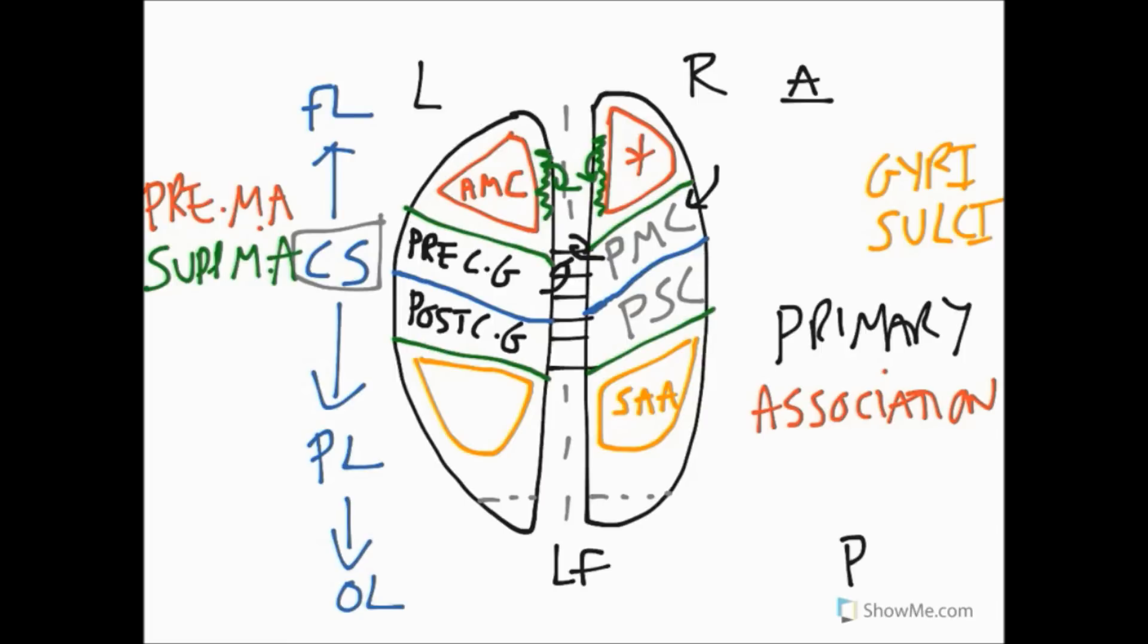I briefly now want to talk about the clinical names for conditions when we get lesions to these particular brain areas. First of all, if we get a problem with the primary motor cortex we're going to have some form of paralysis. If we have a problem with the primary sensory cortex, we're going to have sensory deficits and some form of anesthesia.